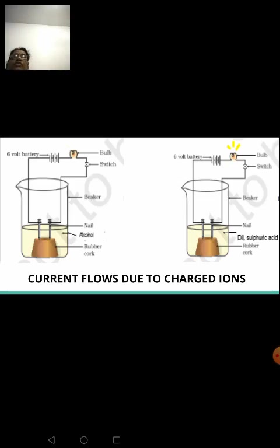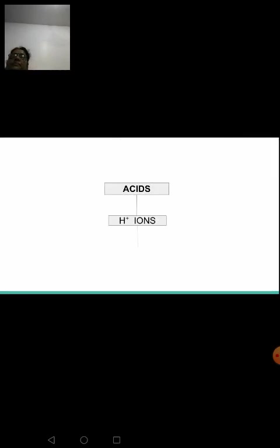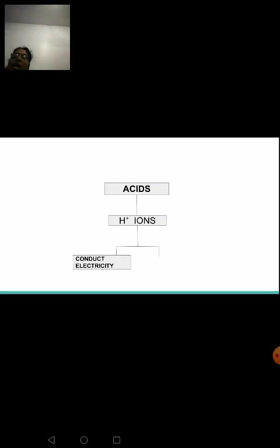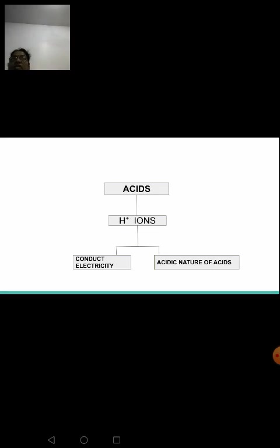Hydrochloric acid and sulfuric acid help in conducting electricity, and the bulb emits light. These acids contain hydrogen ions. When acids are dissolved in water, they dissociate into hydrogen ions, and these hydrogen ions are responsible for the conduction of electricity and for showing the acidic nature of acids.